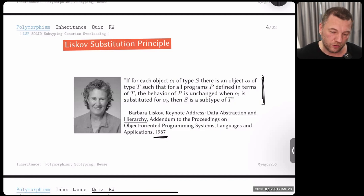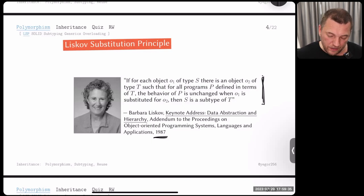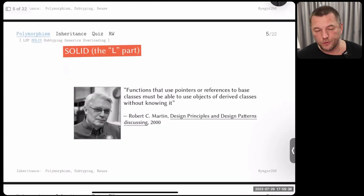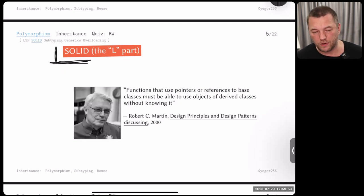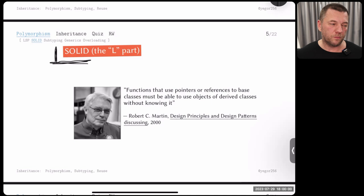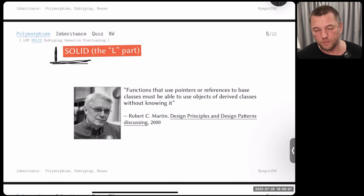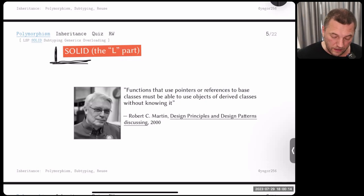That was a fundamental contribution to object-oriented programming. Later, Robert Martin — a very famous expert whose SOLID principles you probably know — reformulated it in simpler terms. The 'L' in SOLID stands for Liskov Substitution Principle. His quote: 'Functions that use pointers or references to base classes must be able to use objects of derived classes without knowing it.' So if your function accepts a fruit, I give you an apple without telling you, and you work with it without knowing I gave you something more specific.